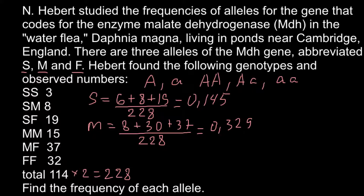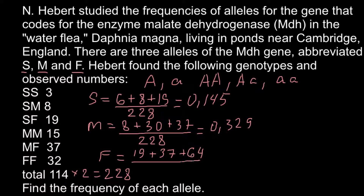The frequency of the F allele is calculated as follows: we have 19 F alleles from one genotype, plus 37 from another, plus 64 from the FF homozygous individuals — since 32 individuals each have two alleles, giving 64 alleles F. Dividing by 228, the frequency of F is 0.526.